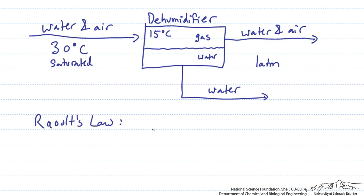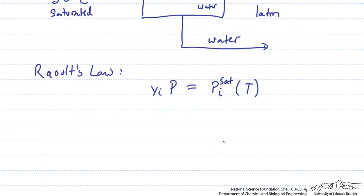Raoult's law is used to relate the composition of the gas to its saturation pressure. It tells us that yi — the molar composition of component i in the gas phase — times the total pressure of the system, equals the saturation pressure at a certain temperature of component i. So we can solve for yi equals pi saturation at a certain temperature divided by the total pressure of the system.